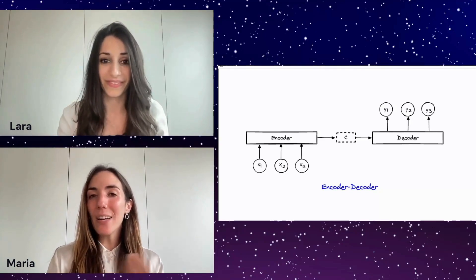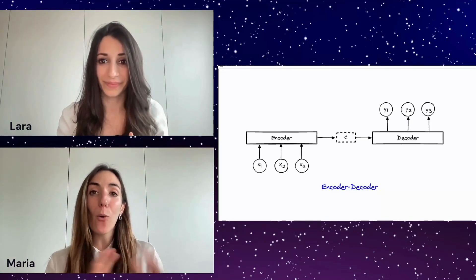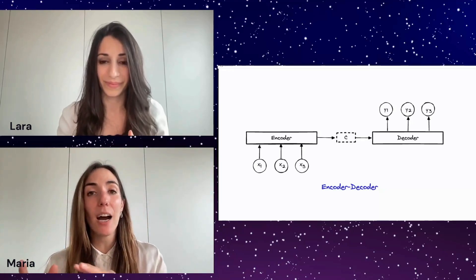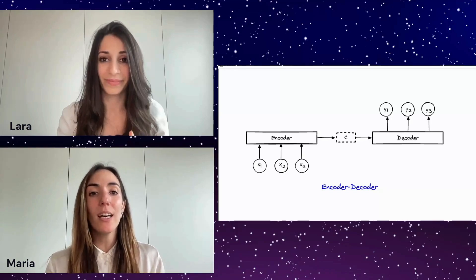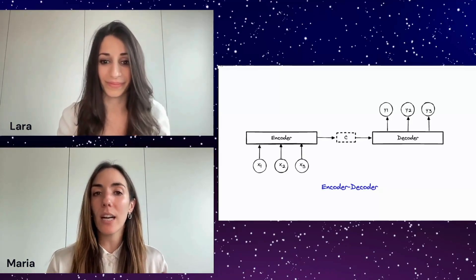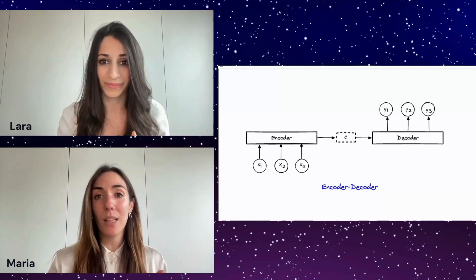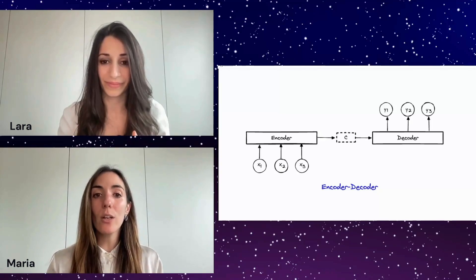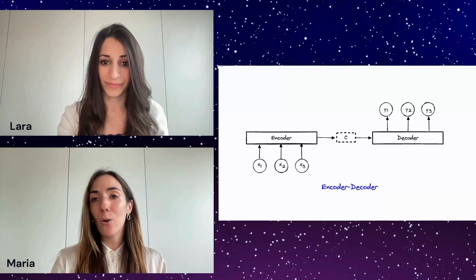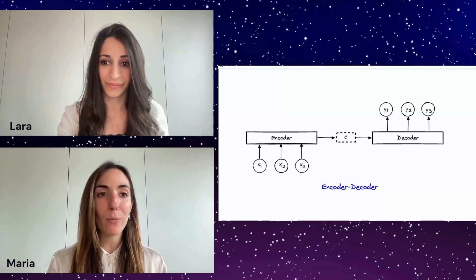Language models can have many different architectures. Some follow only the encoder pattern, some follow only the decoder pattern, and some have both an encoder and a decoder component. Models like BERT follow the encoder architecture, whereas all the GPT models follow the decoder architecture. And then there are some that combine both, like BART or T5. Why there are so many different architectures is something we can discuss in a different video.